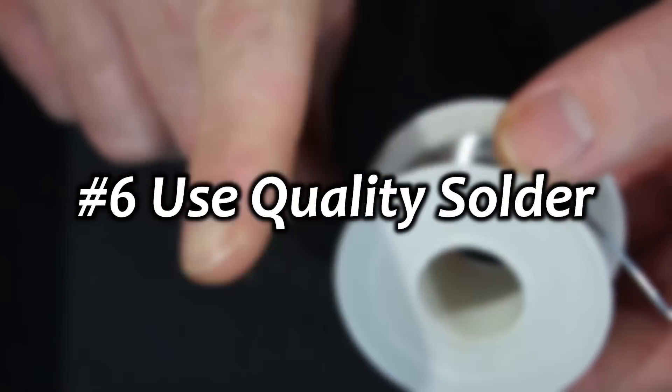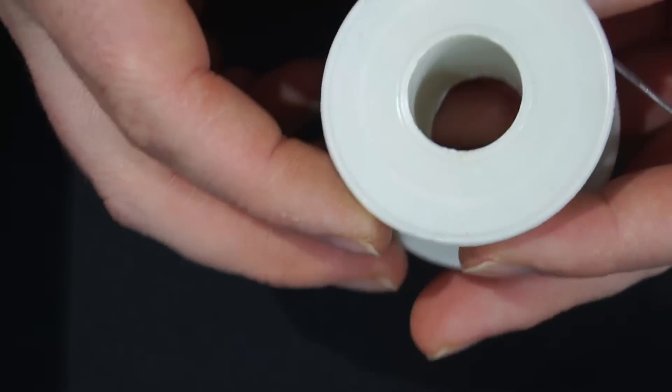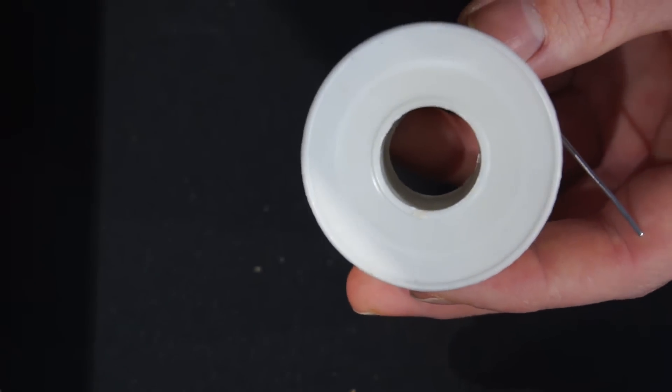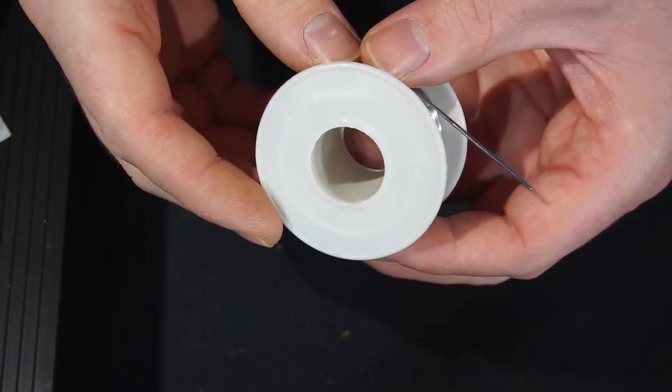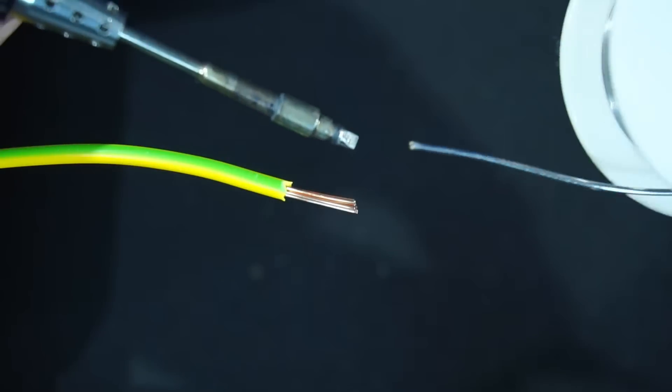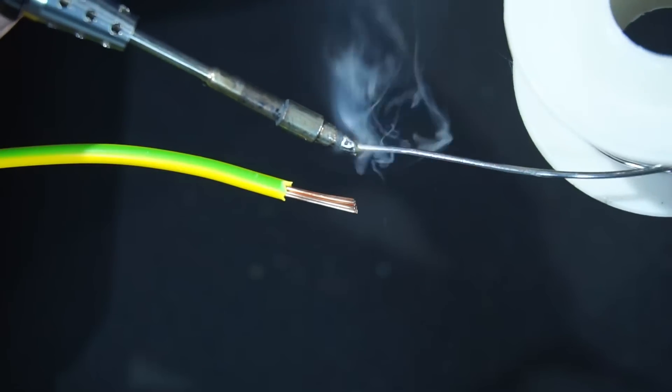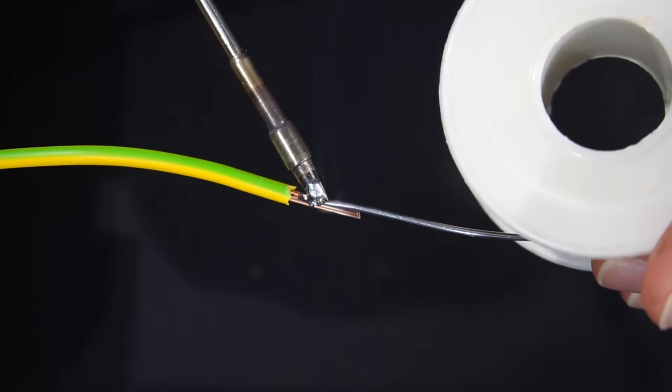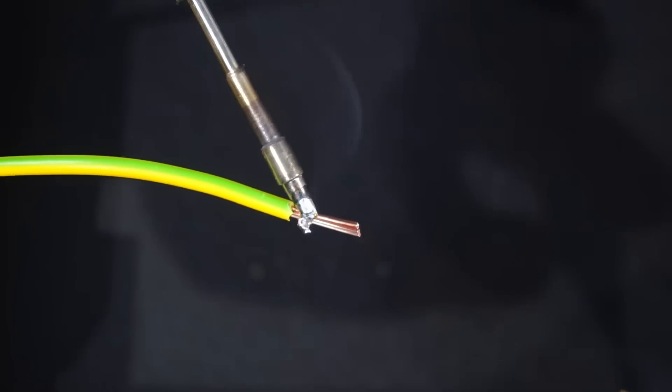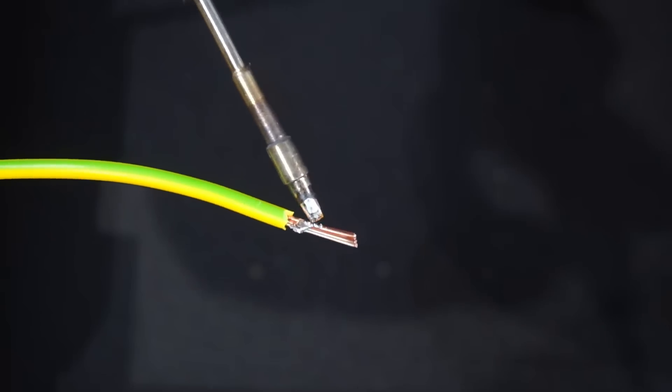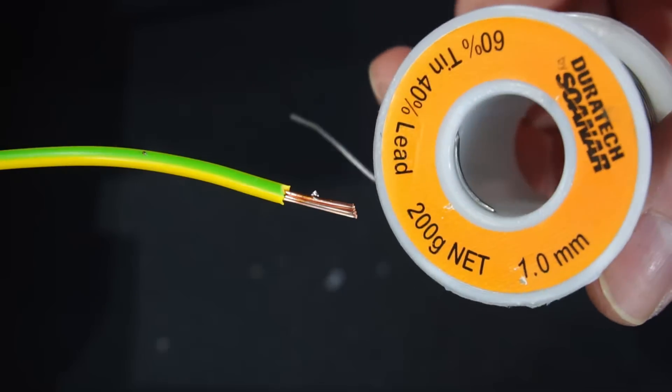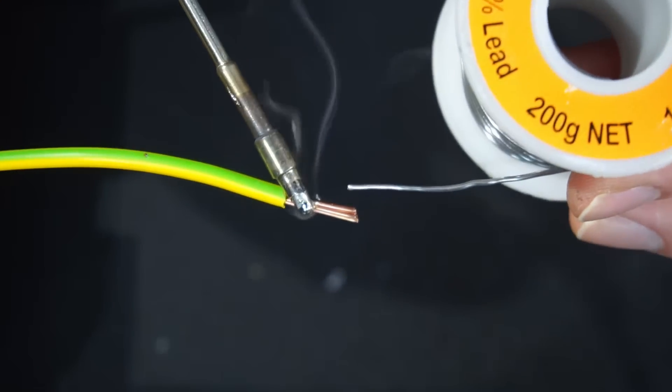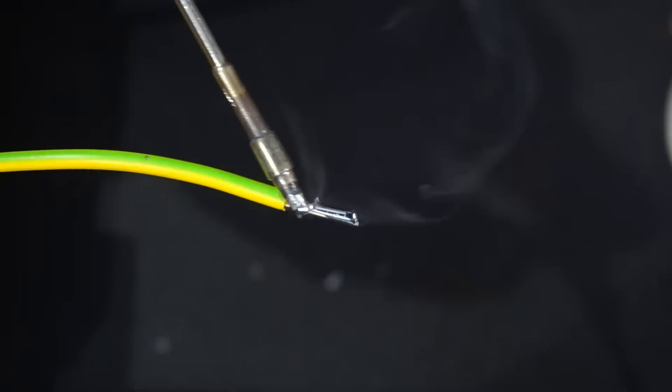Use Quality Solder. That cheap solder sold at the dollar store might seem tempting, but honestly don't waste your money. Using a cheap solder will put you off soldering altogether. This is some cheap no-brand solder. This stuff is impossible to work with. Watch what happens when I try to tin this wire. The solder isn't wetting the copper, and in fact is literally flaking and falling off of the wire. So throw that stuff in the bin and buy some branded Quality Solder. In comparison, look how easy it is to tin the same cable using a Quality Solder.